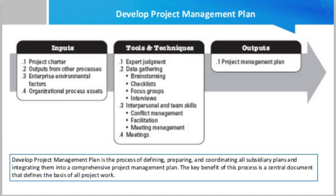It is a mistake to assume that the project plan is developed at one point in time. Although it is an output within the executing process group and forms part of the integration knowledge area, it relies on outputs from the quality, human resource, communication, risk, and procurement knowledge areas to be fully assembled. Since the project management plan consists of many other major planning outputs, it can only be assembled after such component plans have been created. The project management plan represents 13 component plans aggregated together to become the project plan itself.